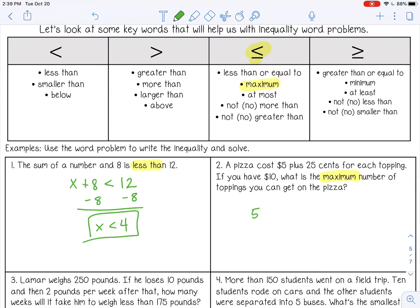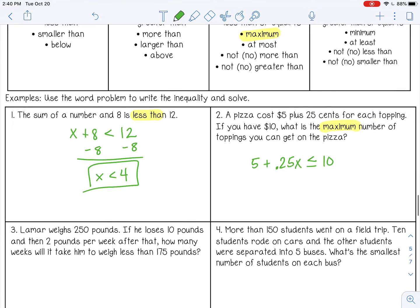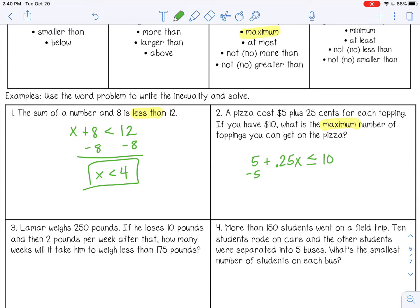So pizza costs $5 plus 25 cents for each topping. So it's like 25 cents per topping. And we're going to write 25 cents like this because we're talking about dollars. It's 0.25 of a dollar per topping. And the maximum we want to spend is $10. So we want this amount to be less than or equal to 10 because we don't have any more than $10. So I'm going to subtract 5 from both sides and then divide by 0.25. So x is less than or equal to 20. So the maximum amount of toppings you can get is 20 toppings.